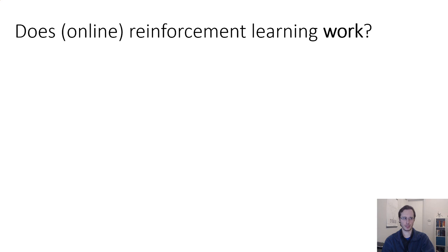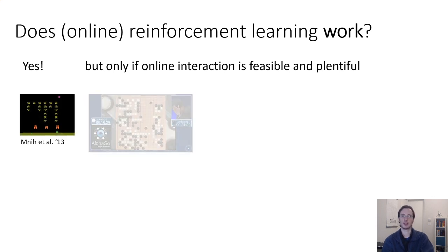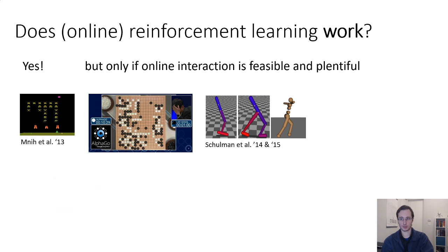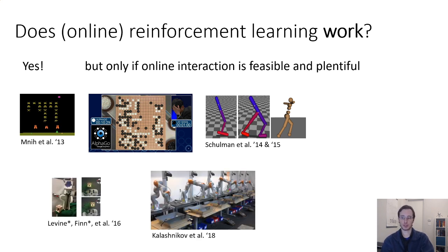Online reinforcement learning does work, but only if online interaction is feasible and plentiful. This is the case if you're playing Atari games in an emulator, playing the game of Go where you can simulate as many games as you want, or training robotic systems in simulation. You can also do reinforcement learning in the real world if you have robotic systems where it's okay to let them try and fail repeatedly. For example, in work from Google in 2018, we managed to get state-of-the-art results for robotic grasping using online reinforcement learning in a setup where robots could try the task repeatedly.